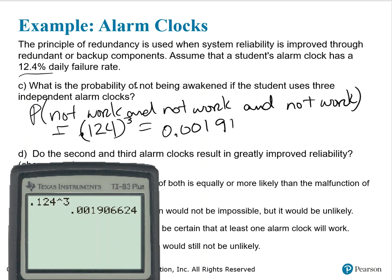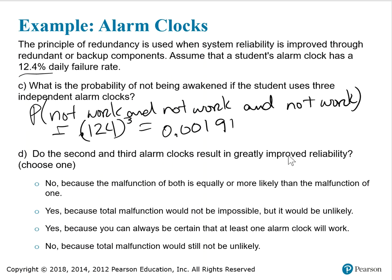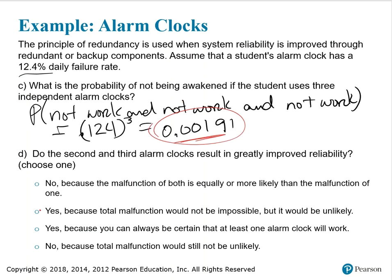Do the second and third alarm clocks result in greatly improved reliability? Looking at the answer choices: No, because the malfunction of both is equally likely or more likely than the malfunction of one — that's not correct. Yes, because the total malfunction would not be impossible but it would be unlikely — that's the right answer. With three alarm clocks, there is a significantly low probability that all three would not function, so yes, the second and third alarm clocks do result in greatly improved reliability.